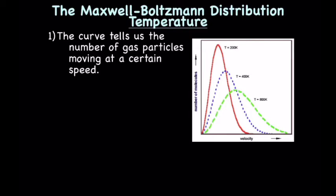The curve tells us the number of gas particles moving at a certain speed. If we start by looking at just the red curve, we can get an idea of how many molecules are moving at certain speeds. The red curve represents a sample of gas molecules at 200K. The majority of our molecules are at this sort of middle velocity. A very few have a very slow speed. A few also have a very fast speed. But the majority of the molecules have this middle speed, which is our average speed.